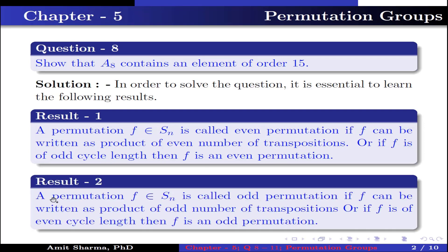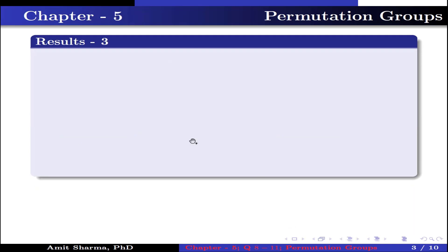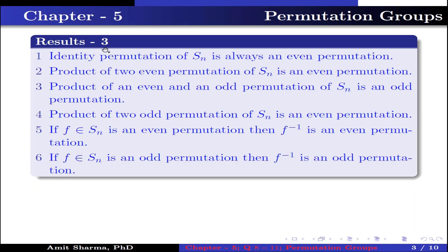Result number 2: A permutation F belonging to Sn is called an odd permutation if F can be written as a product of an odd number of transpositions, or if F is of even cycle length, then F is an odd permutation. Result number 3: The identical permutation of Sn is always an even permutation. The product of two even permutations is an even permutation. The product of an even and an odd permutation is an odd permutation. The product of two odd permutations is an even permutation. If F is an even permutation, then F inverse is an even permutation. If F is an odd permutation, then F inverse is an odd permutation.